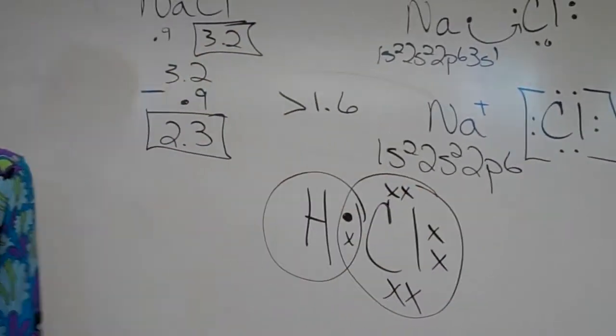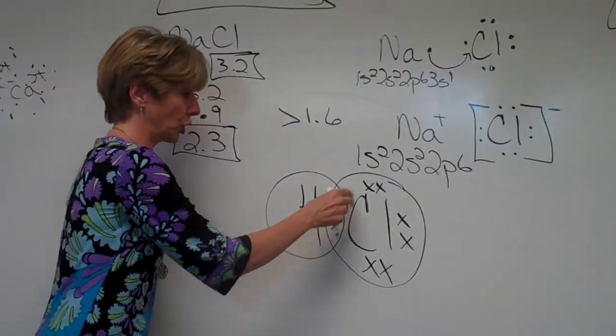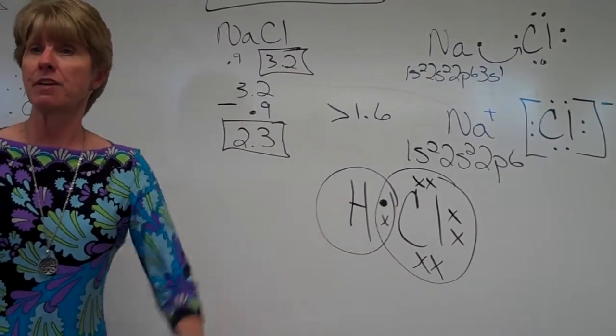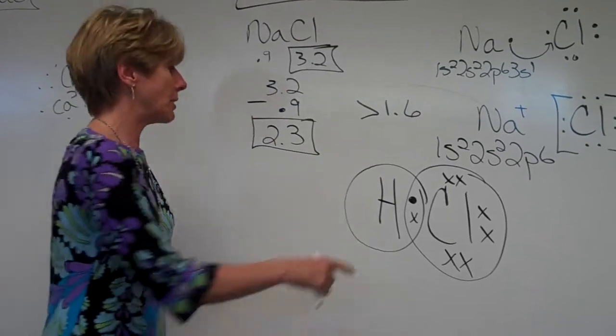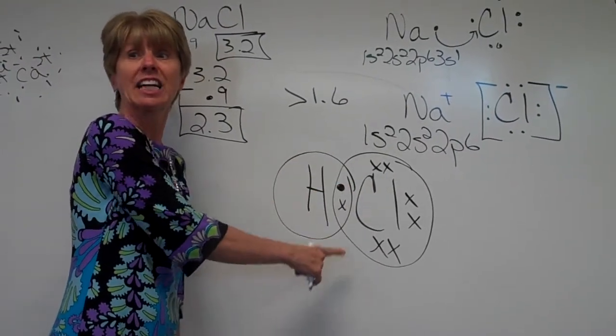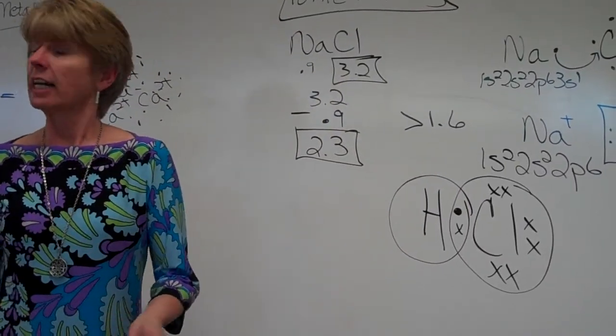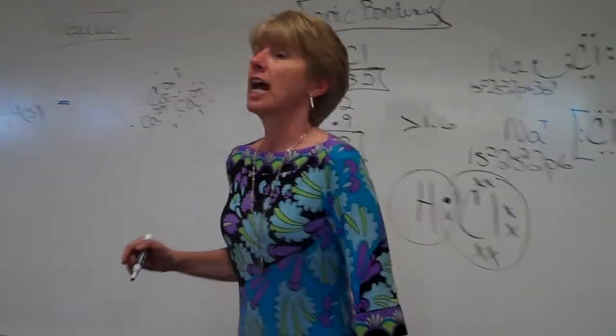How many valence electrons does chlorine think it has around it? It thinks it has 2, 4, 6, 8. It's happy. It has 8 valence electrons. Everyone wants to look like a noble gas. But now look at hydrogen. Hydrogen thinks it has 2. So hydrogen, though it doesn't have 8, it thinks it's like helium that has a complete first energy level.